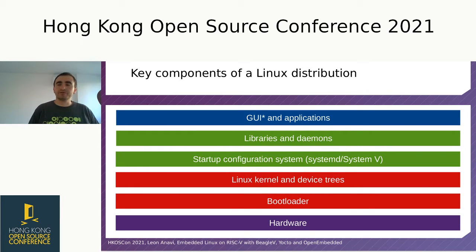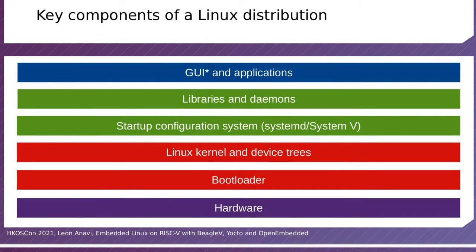Building a Linux distribution requires a lot of components. At the bottom there is the hardware, which is always specific in the embedded world. There is a bootloader to boot the hardware and load the Linux distribution. Then there is the Linux kernel, device trees and device tree binary overlays, a startup configuration system — nowadays almost all new systems are based on systemd. The Linux distribution also includes a huge number of packages providing various libraries and daemons, as well as all dependencies for the application running on top.